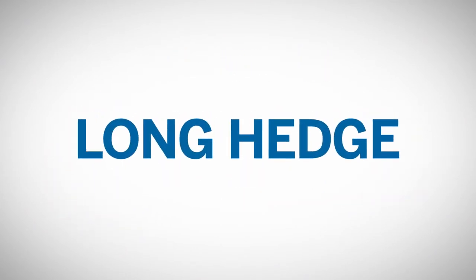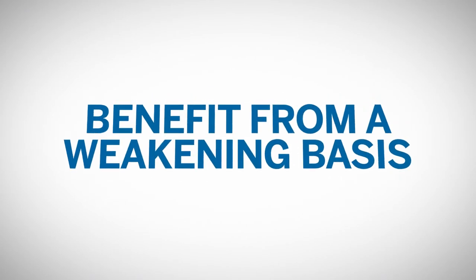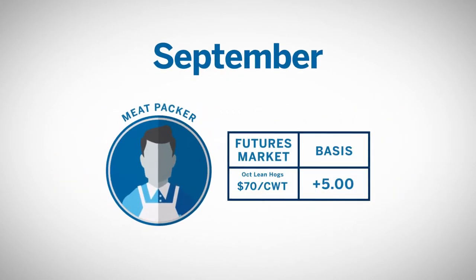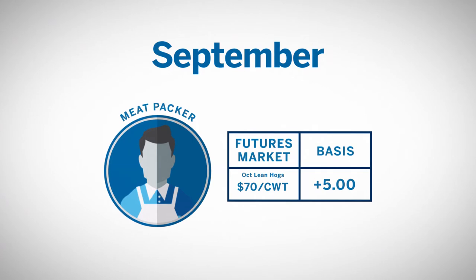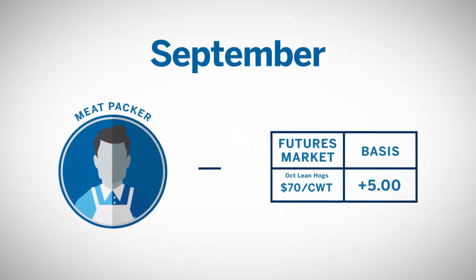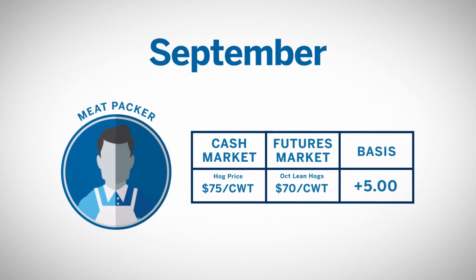How does basis affect the performance of a long hedge? As you might expect, it has the exact opposite effect. Long hedgers benefit from a weakening basis. Imagine that in March, a meatpacker is planning to purchase hogs in September for his packing operation, so he's looking to establish a long position in the October lean hog futures contract. Lean hog futures are trading at $70 per hundredweight, and the local basis is typically $5 over the futures price. The hedge would result in an expected purchase price of $75 — the $70 October futures price plus the $5 over expected basis.